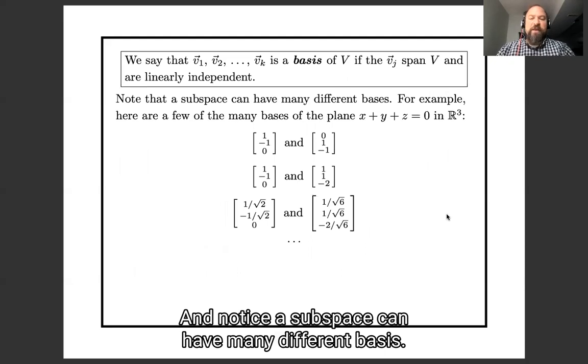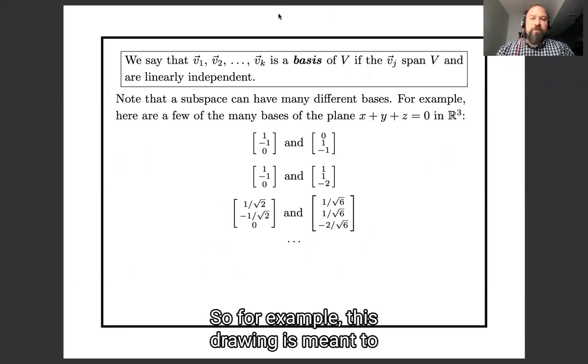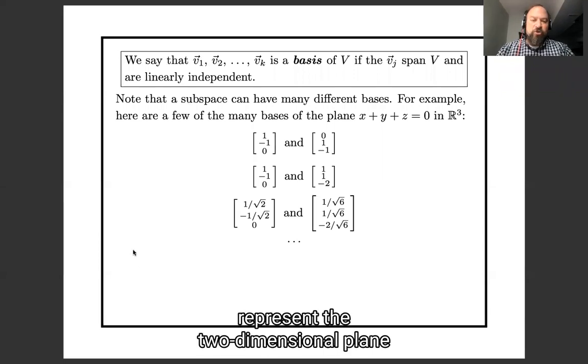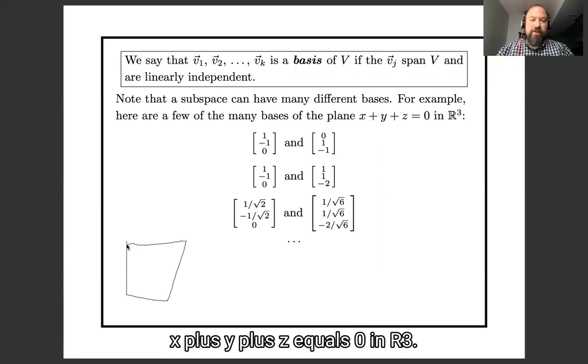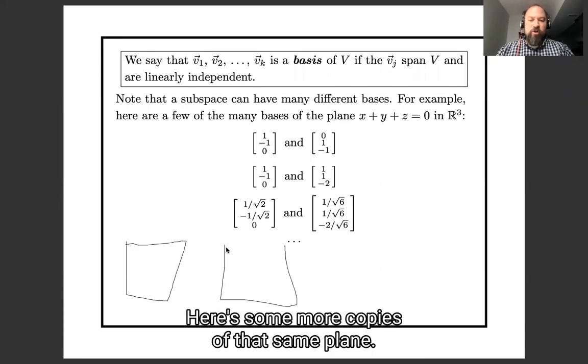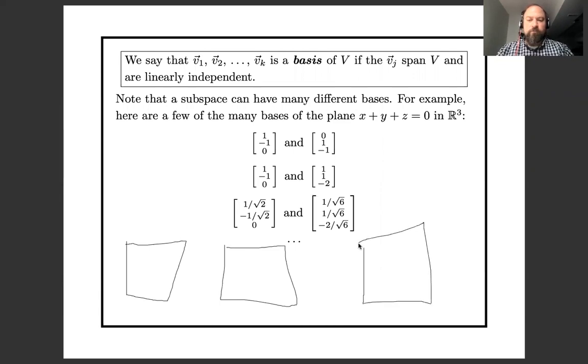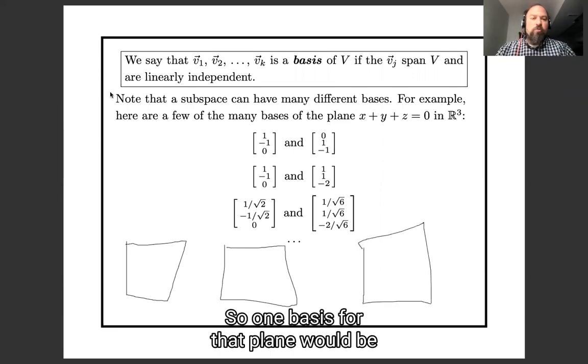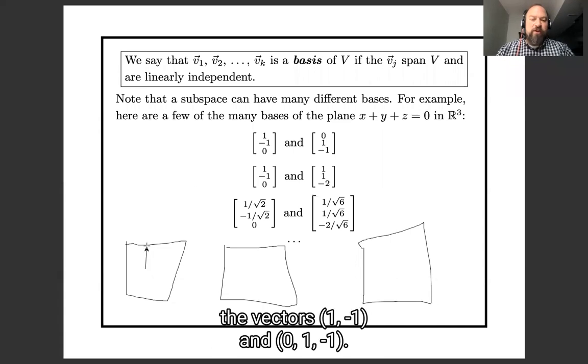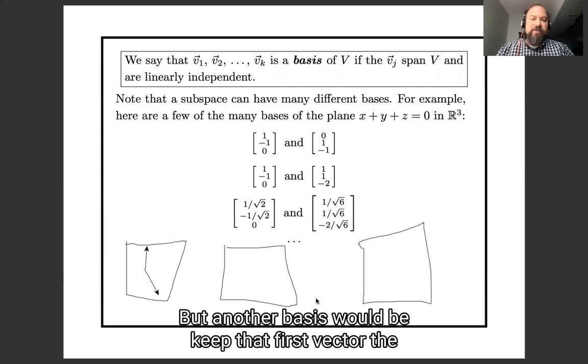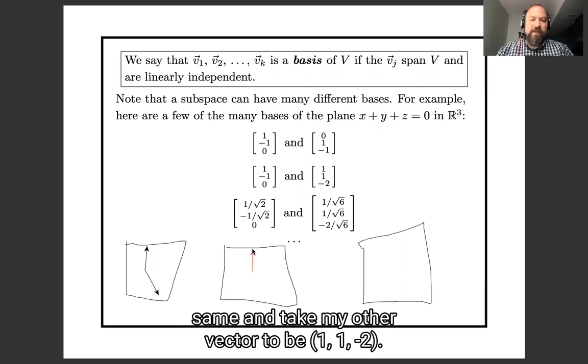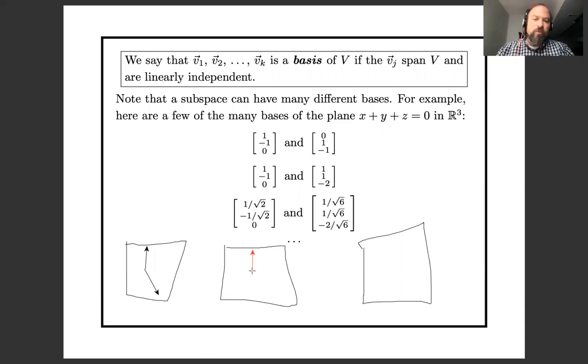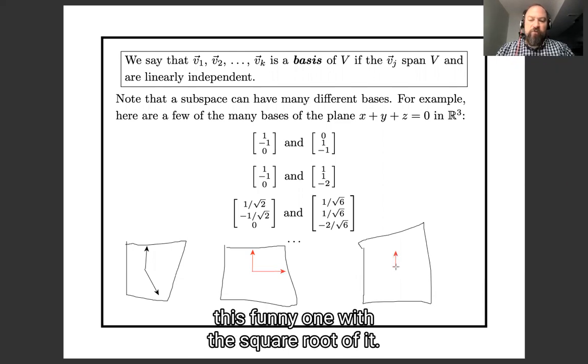And notice the subspace can have many different bases. For example, this drawing represents the two-dimensional plane x plus y plus z equals zero in R3. Here's some more copies of that same plane. So one basis for that plane would be the vectors 1, negative 1, 0 and 1, negative 1. But another basis would be keep that first vector the same and take my other vector to be 1, 1, negative 2.